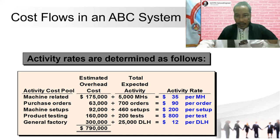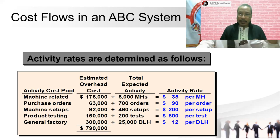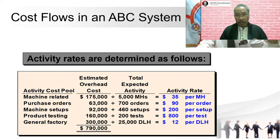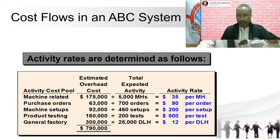The highest value computed is product testing at $800 per test. That is why when we test products, we do not test all of them — for example, per 1,000 units we only test three. There are companies that test all products, but that is very expensive because testing has the greatest rate, as shown here with $800 per test being very high compared to other overhead costs.